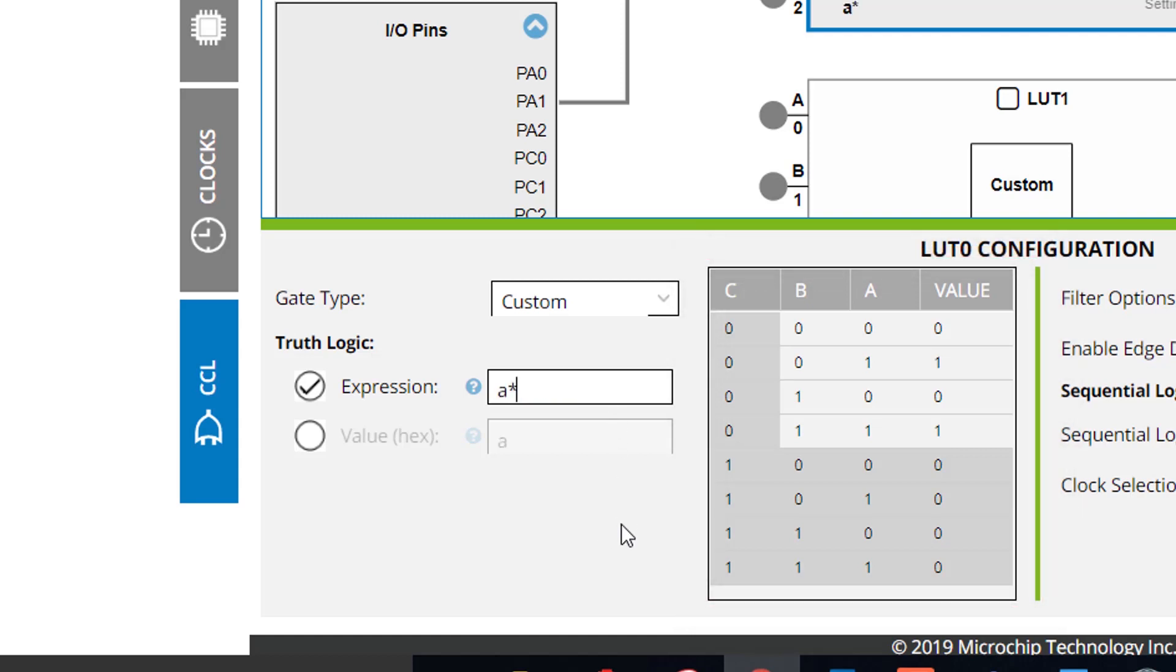One way you can do this is by giving the CCL an equation. As you can see, when I enter my equation, the values of the truth table change. Now my CCL's behavior will reflect that of the given equation.